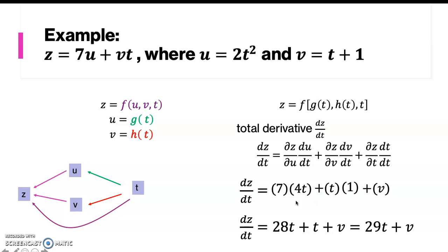So the final result is: you have 28t plus t plus v, or dz/dt is just 29t plus v.